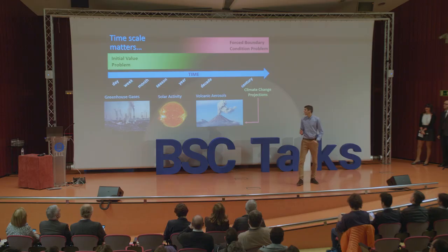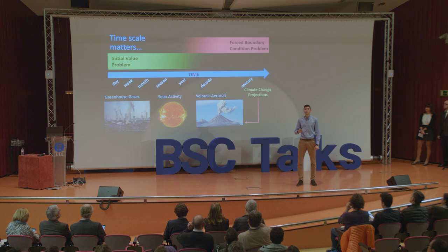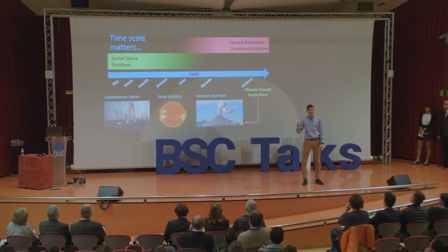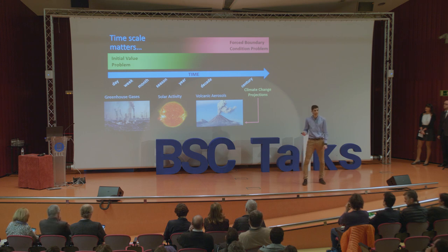Let me explain this. It means basically what would happen in the future climate if we change the balance of energy that enters the Earth's system. These boundary conditions are typically represented by greenhouse gases, solar activity, and aerosol emissions from volcanic eruptions.